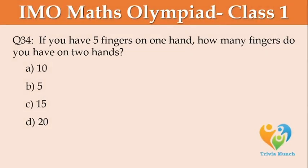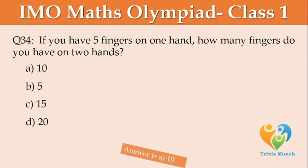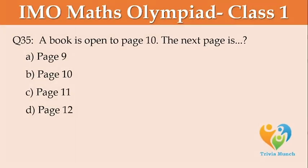If you have five fingers on one hand, how many fingers do you have on two hands? Option A: 10, Option B: 5, Option C: 15, Option D: 20. A book is open to page number 10. The next page is ___. Option A: Page 9, Option B: Page 10, Option C: Page 11, Option D: Page 12.